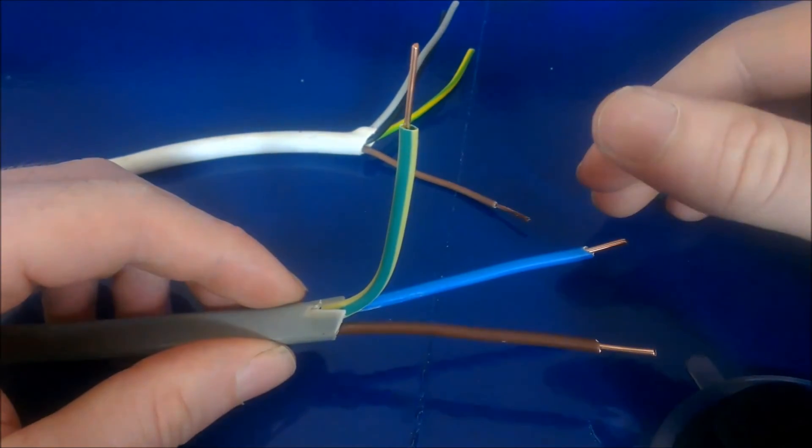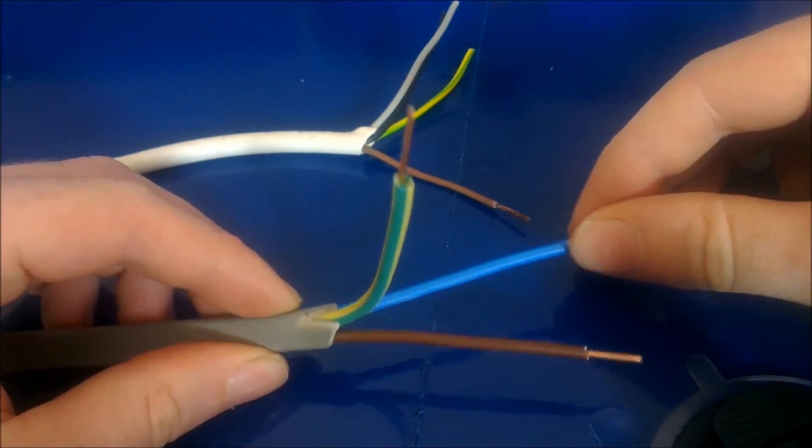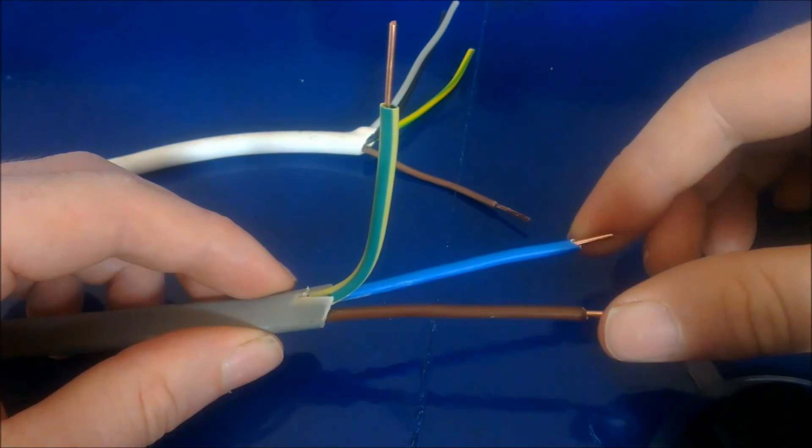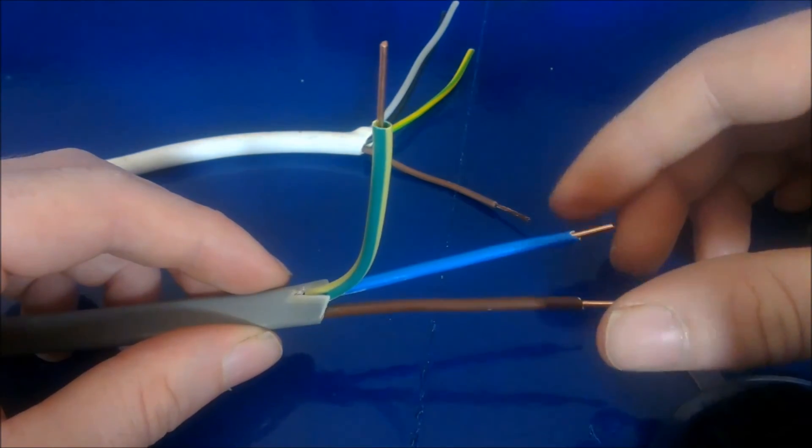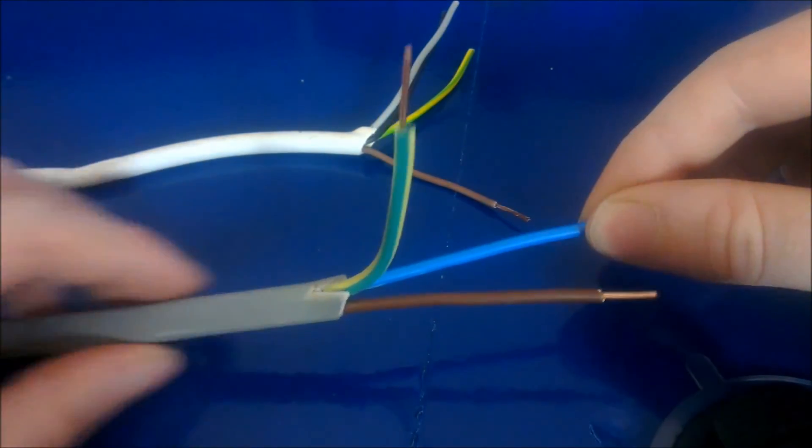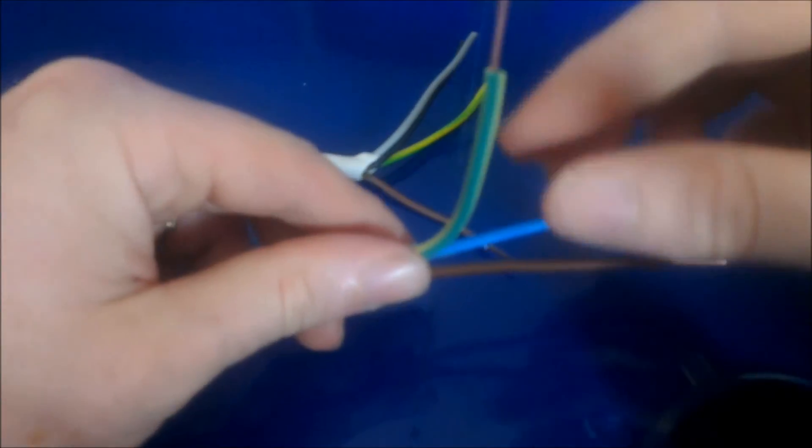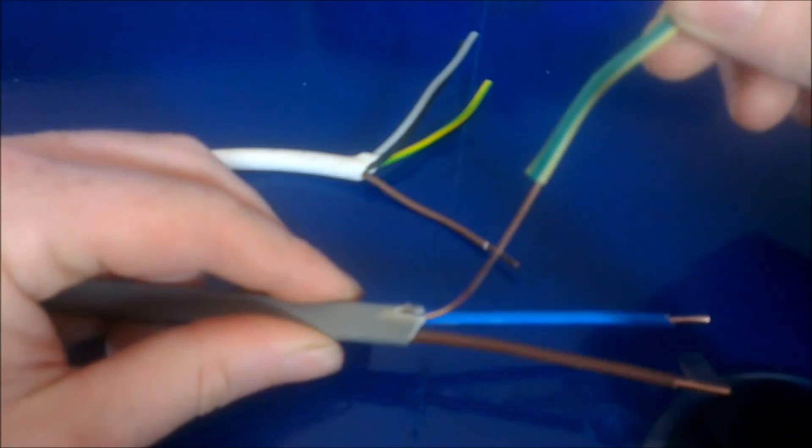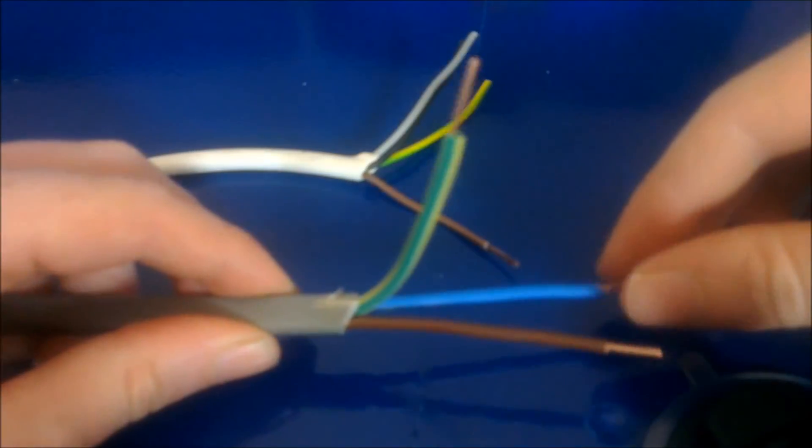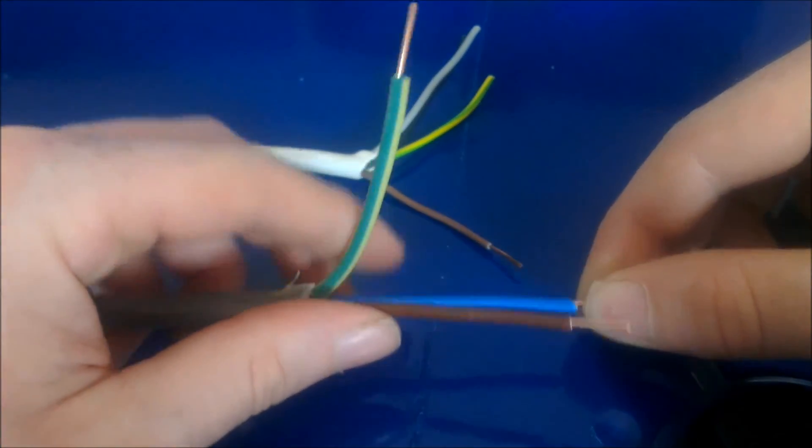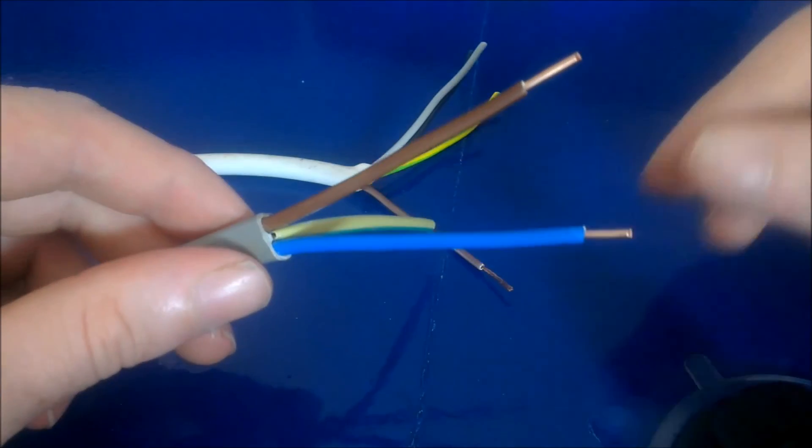So there you have it—that's 2.5mm cable, normally used for a ring main circuit, and that is what it looks like. It's grey covered, then it's got your bare earth inside sleeved over with yellow and green sleeving, and then your live and neutral conductors.